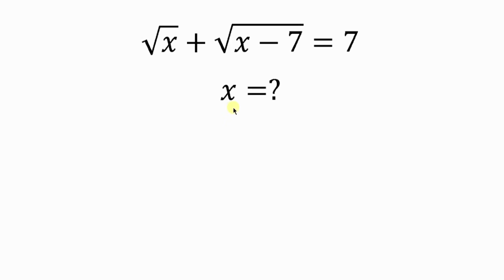Now let's solve for the value of x, given that the square root of x plus the square root of x minus 7 is equal to 7.